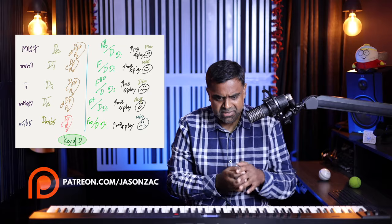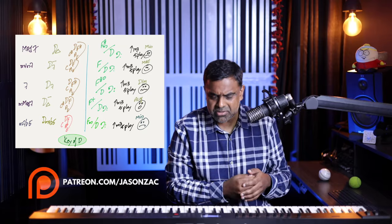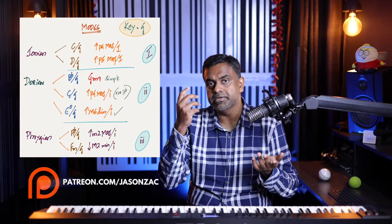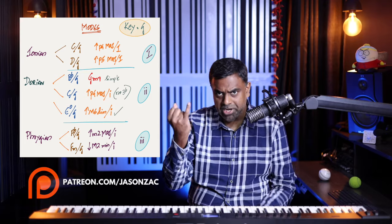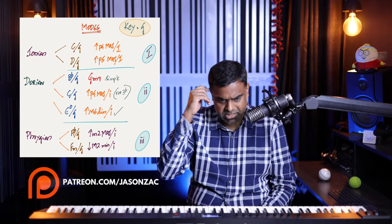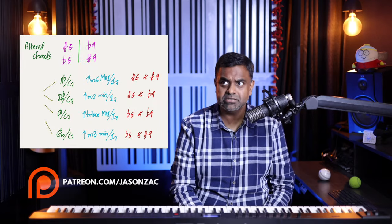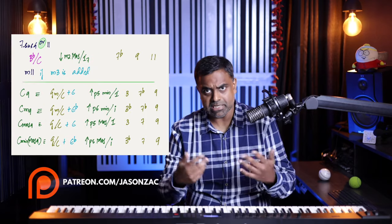For this lesson, we'll take the modes of the major scale: Ionian, Dorian, Phrygian, Lydian, Mixolydian, Aeolian and Locrian. Ionian is at 1, Dorian is the 2nd degree of the major scale, Phrygian is at the 3rd degree, Lydian is at the 4th, Mixolydian is at the 5th, Aeolian is at the 6th, and lastly Locrian is at the 7th degree.